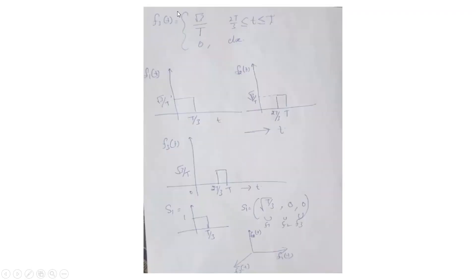Similarly, we can find f3(t) by subtracting the projections of s3(t) onto both f1(t) and f2(t). In that case, f3(t) comes out to be √(3/T) from 2T/3 to T. So we now have all three orthogonal basis functions.